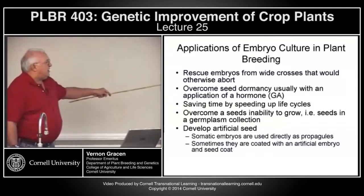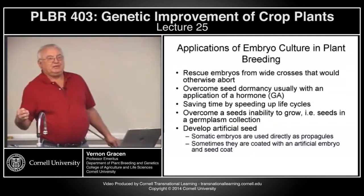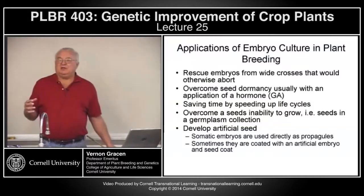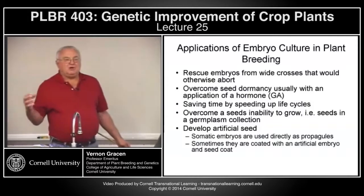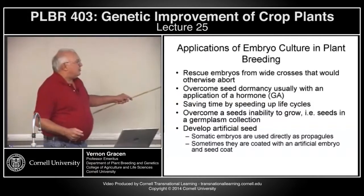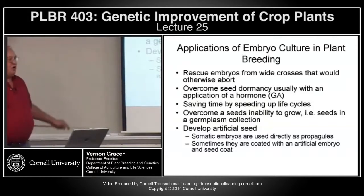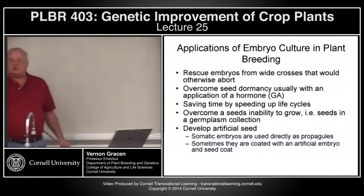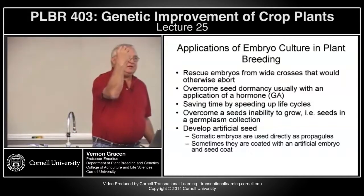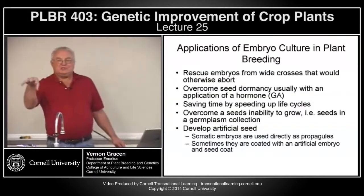An area that has been developed commercially, particularly in vegetable seed, is developing artificial seed. You can take somatic embryos, produce large quantities of them, and either sell them directly as propagules or more often coat them with an artificial seed coat that acts like the normal seed coat and provides some nutrients, and maybe even some herbicide or fungicide to kill pathogens and weeds in the soil.